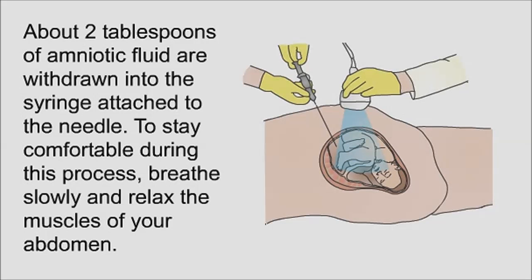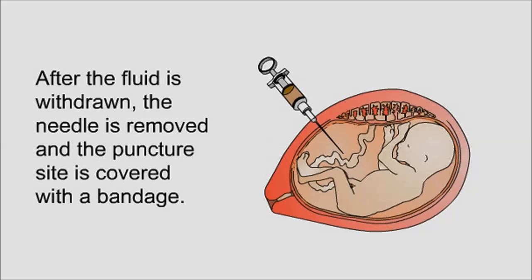About two tablespoons of amniotic fluid are withdrawn into the syringe attached to the needle. To stay comfortable during this process, breathe slowly and relax the muscles of your abdomen. After the fluid is withdrawn, the needle is removed and the puncture site is covered with a bandage.